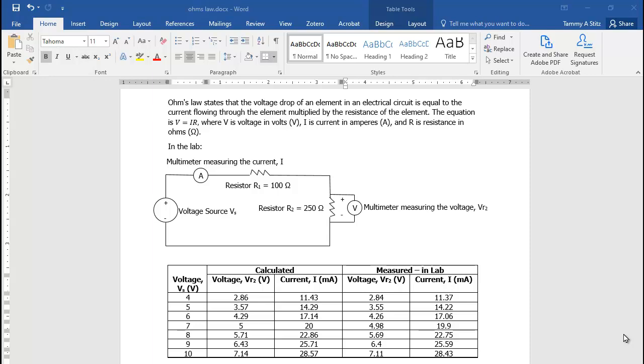In my experiment, I measure voltages for the voltage source being 4 to 10, where I increment the voltage by 1 volt each time. Then I have a calculation using the formula for the voltage across the resistor and the current. Then I take a measurement in the lab. Since I'm measuring this voltage, it is quantitative.